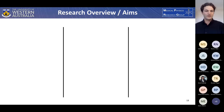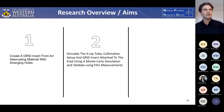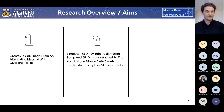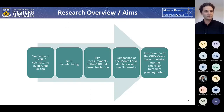This project had three aims. The first was to create a grid insert from an attenuating material with diverging holes. The second was to simulate the X-ray tube, collimation setup, and grid insert when attached to the X-RAD using a Monte Carlo simulation, and then validate this using film measurements. The third was to implement this Monte Carlo model into the SmartPlan treatment planning system.